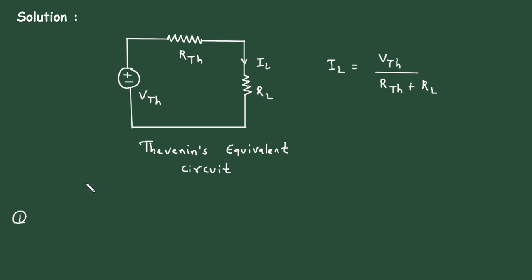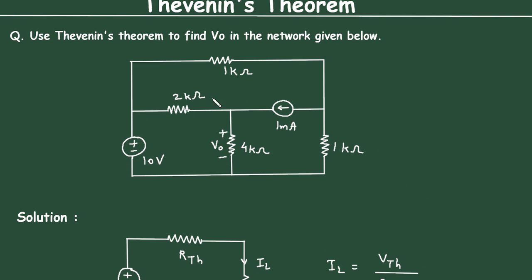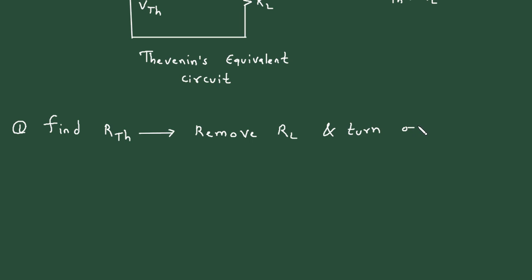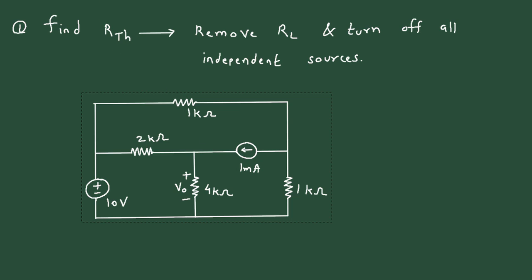Now first of all to get this circuit, we will find the value of Rth first. Step number 1: find Rth, that is Thevenin's resistance. To find Rth, remove RL and turn off all independent sources. Here we will remove RL — this 4 kΩ is the value of RL. Let's say this is terminal A and this is terminal B.